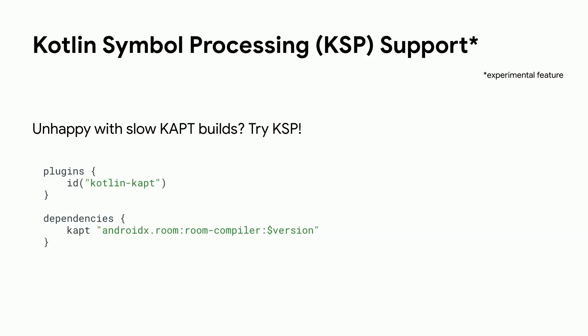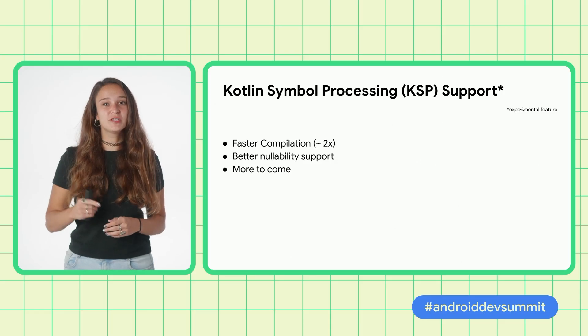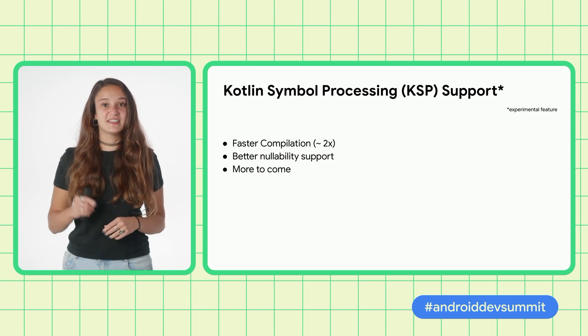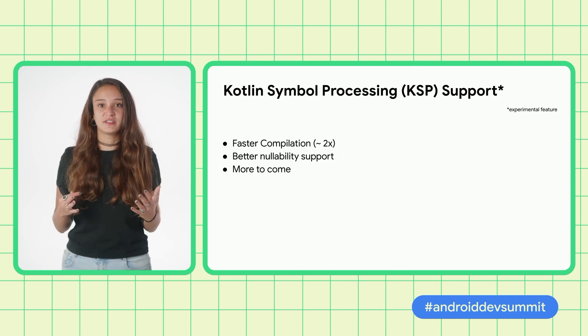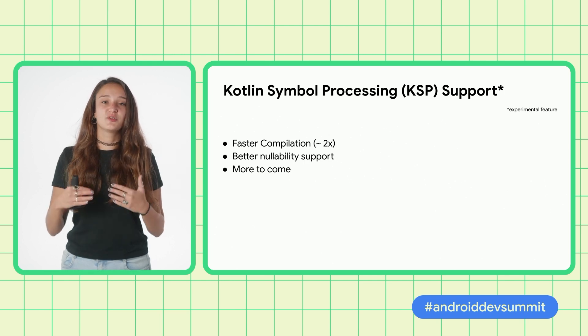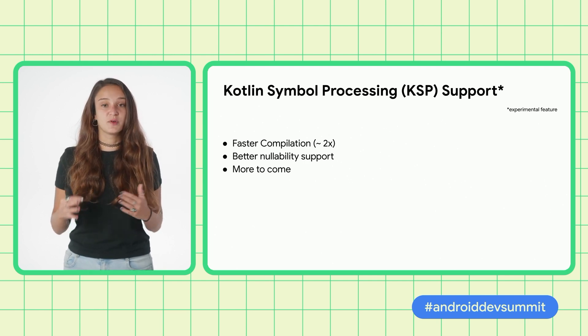Room 2.4 now includes support for KSP, a native replacement for KAPT that runs annotation processors as a part of Kotlin compilation. Moving to KSP is very simple — just remove the Kotlin KAPT plugin (unless you have other annotation processors using KAPT) and replace it with the KSP plugin. Similarly, in your dependencies, add Room to the KSP configuration instead of KAPT, and you're done. So why switch to KSP? KSP provides up to two times faster compilation for Room, speeding up your builds and saving valuable development time. As KSP directly reads Kotlin code, Room has a much better understanding about the Kotlin code — like nullability — and generates code accordingly, preventing null pointer exceptions at runtime and much more.